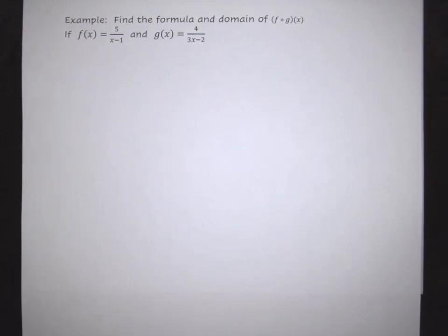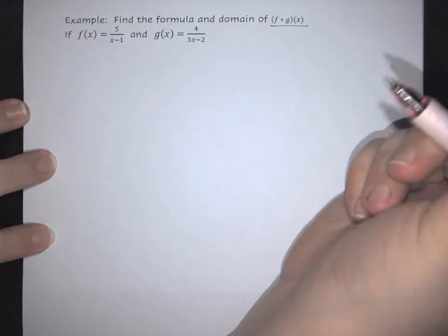Here we're going to do an example where you're going to find the formula and the domain for the composition of the two given functions. So the composition we're going to do is f of g.